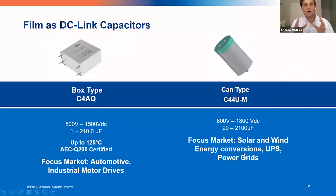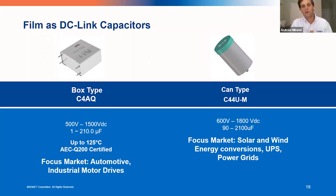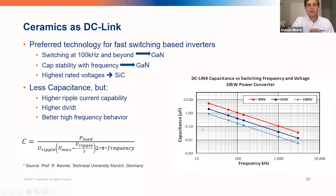We have two types of DC link capacitors for film. The first is the box type, primarily seen in the automotive world, rated up to 125°C, which provides a lot of advantages especially for film. We also have a can type seen more in higher-voltage applications, rated up to about 1800V — we're seeing this more in energy conversion, power grids, solar, and alternative energy applications.